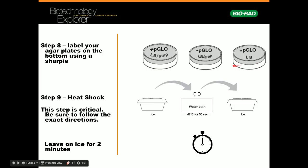You're going to have three agar plates. All three agar plates are going to contain LB. That LB is nutrients for the bacteria to live on and use for energy. One is only going to contain LB, nothing else, and you're going to label that minus p-glo. Then you're going to have two plates that contain LB and ampicillin. Ampicillin is an antibiotic. One you're going to label LB/amp minus p-glo. The other, you're going to label LB/amp plus p-glo. Write these on the bottom on the agar side in Sharpie. No need to use tape.